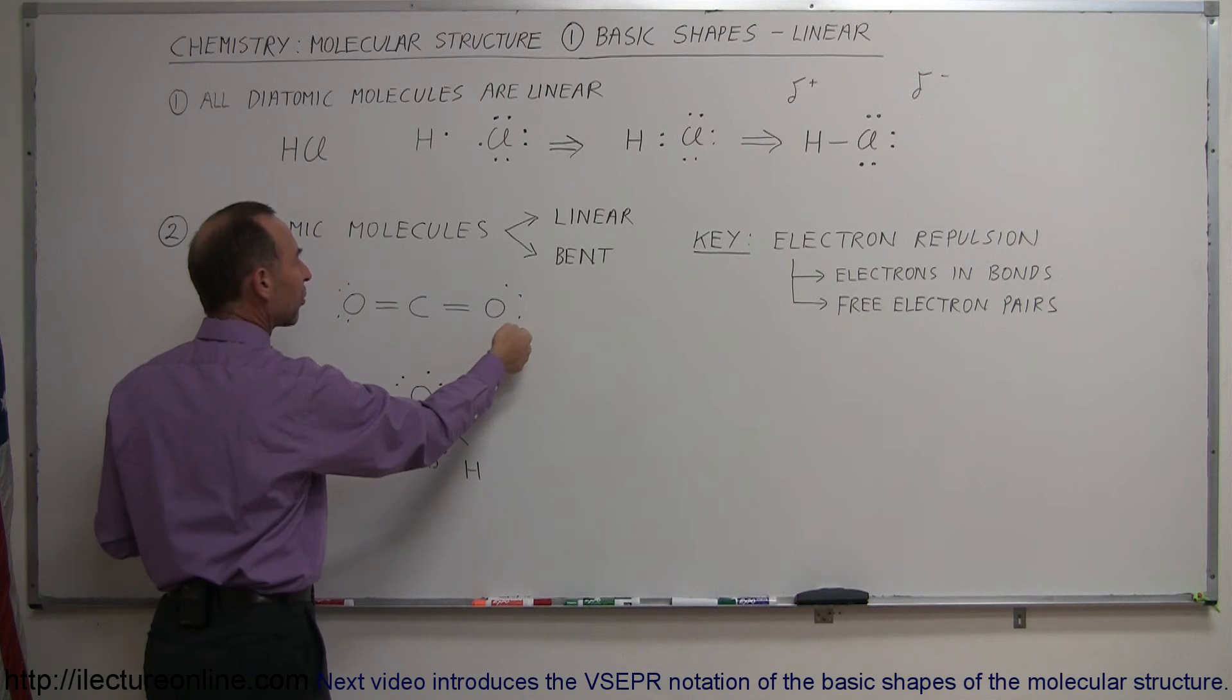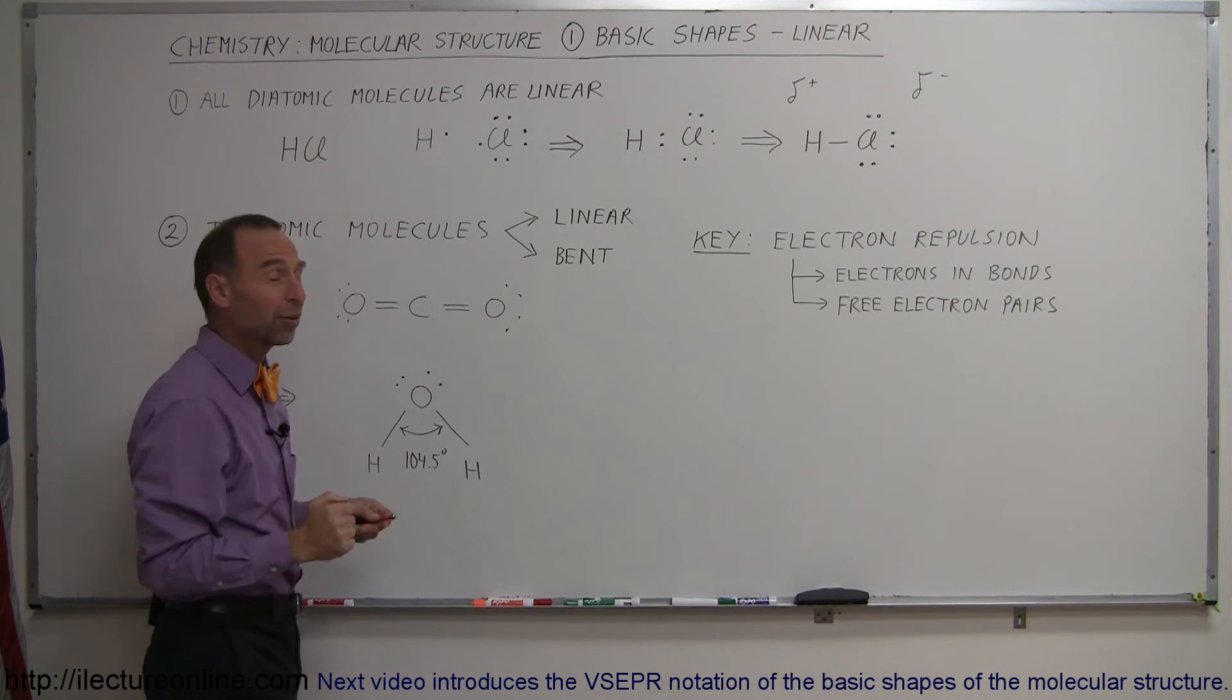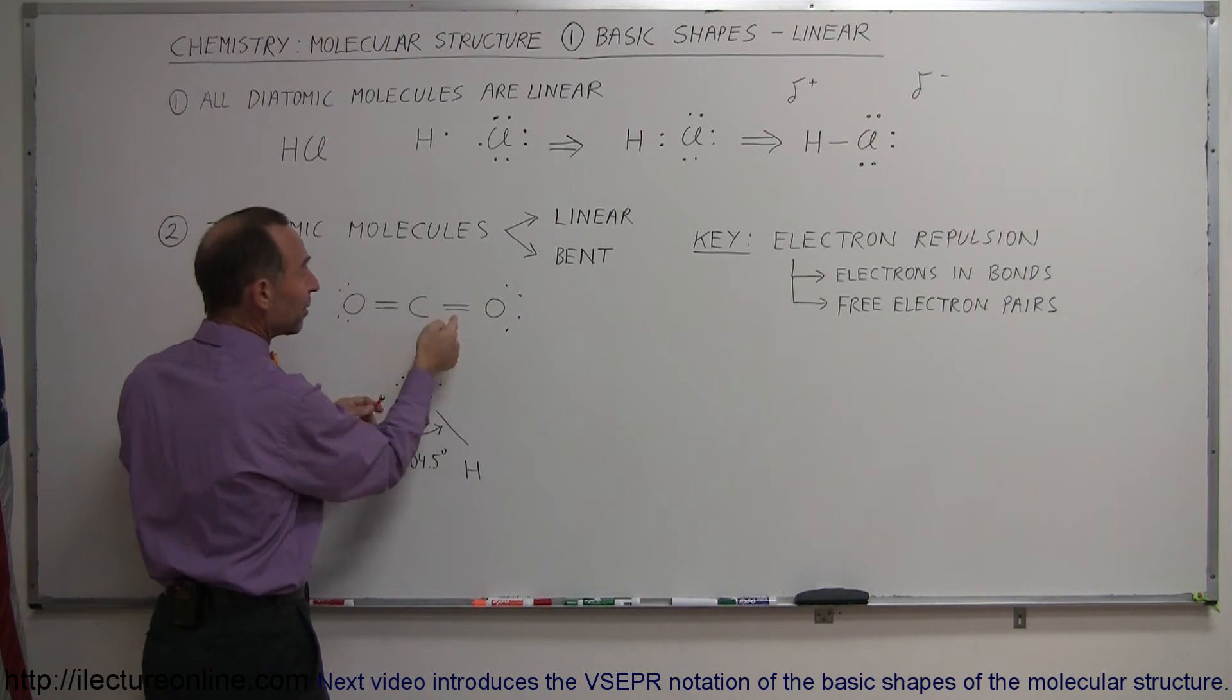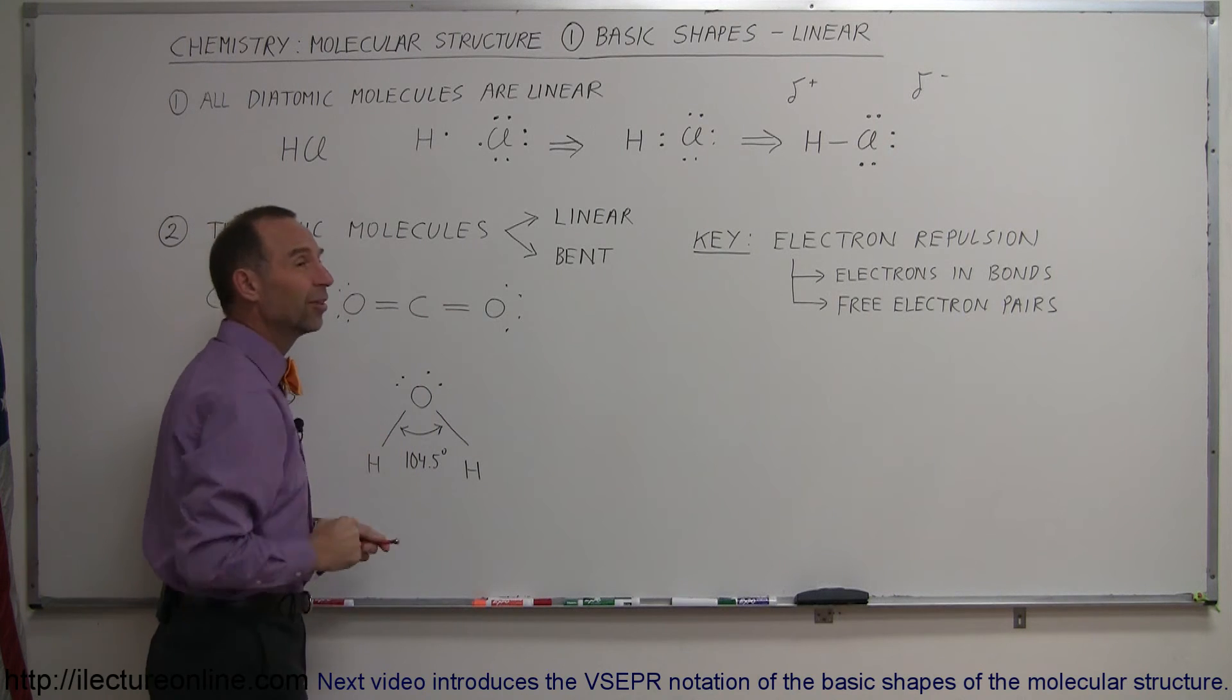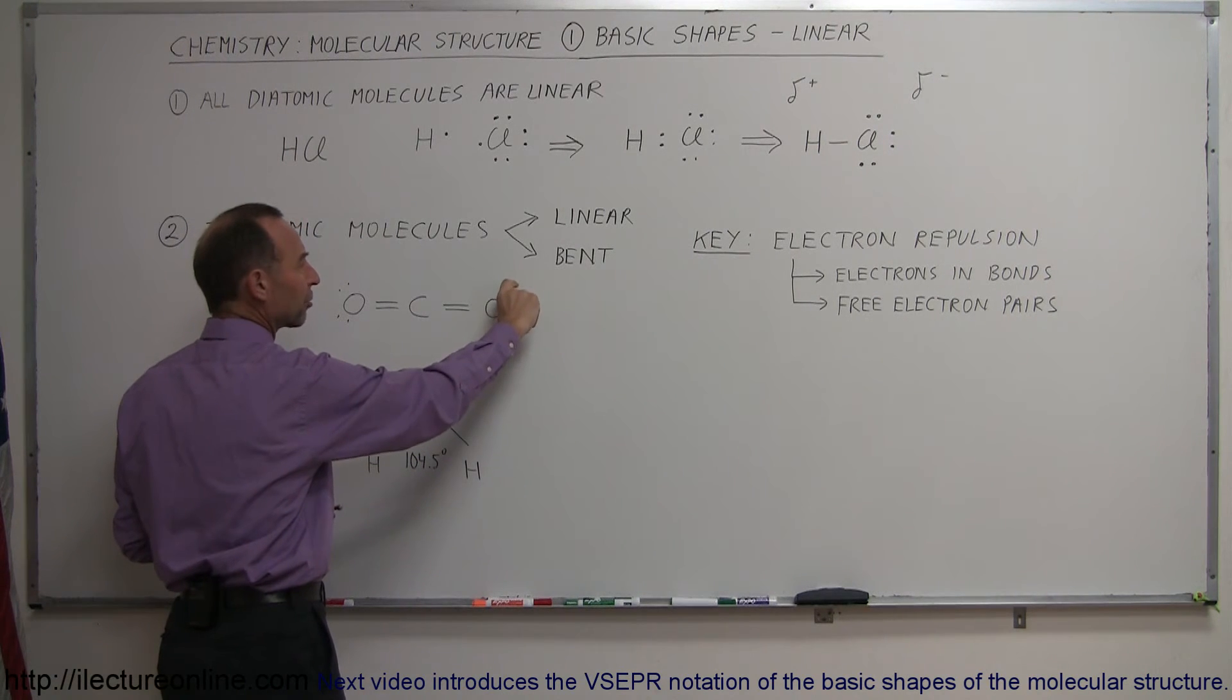These three electrons right here will repel one another so they want to be as far away from one another as possible. But they also repel the electrons used in bonding, so they want to be as far away as possible from these electrons.